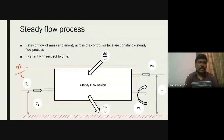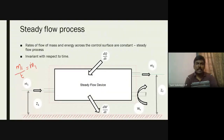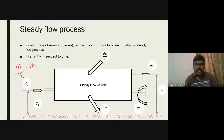For example, if one kilogram of air passes through the steady flow device in five seconds, m-dot is 0.2 kg/s. In steady flow, m2-dot will also be 0.2 kg/s. If it is not steady flow, m2-dot could be less — say 0.1 or 0.15 kg/s — but it cannot exceed m1-dot. This is the steady flow device we are going to consider.